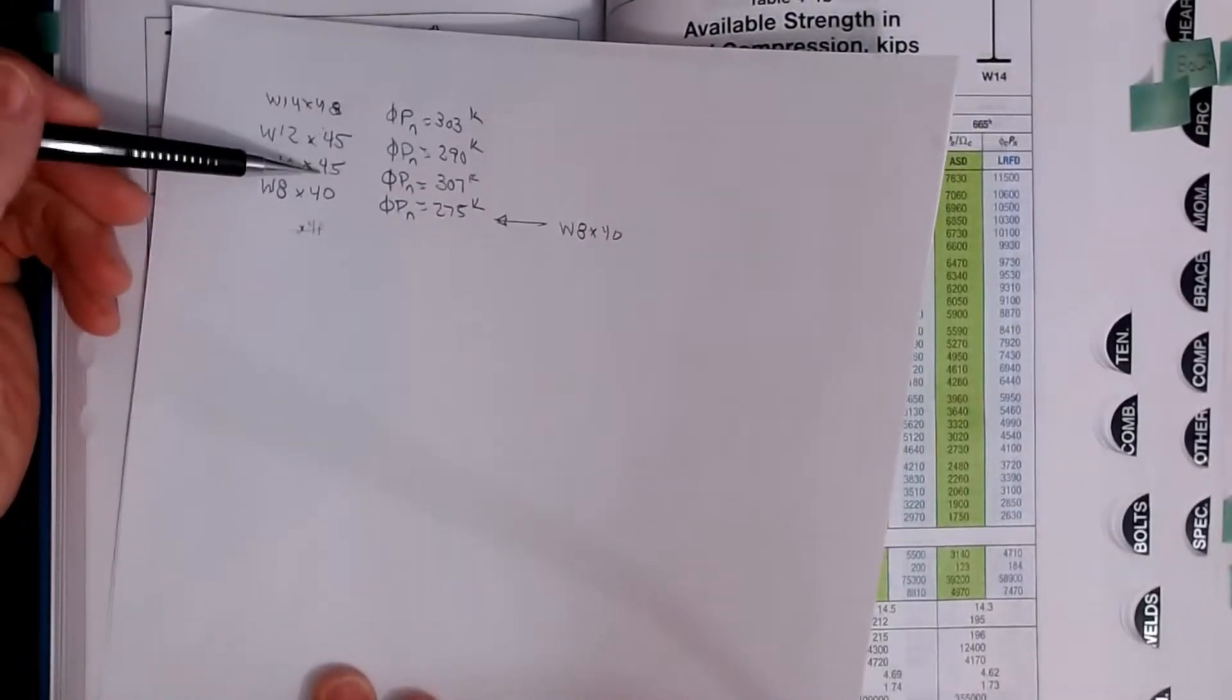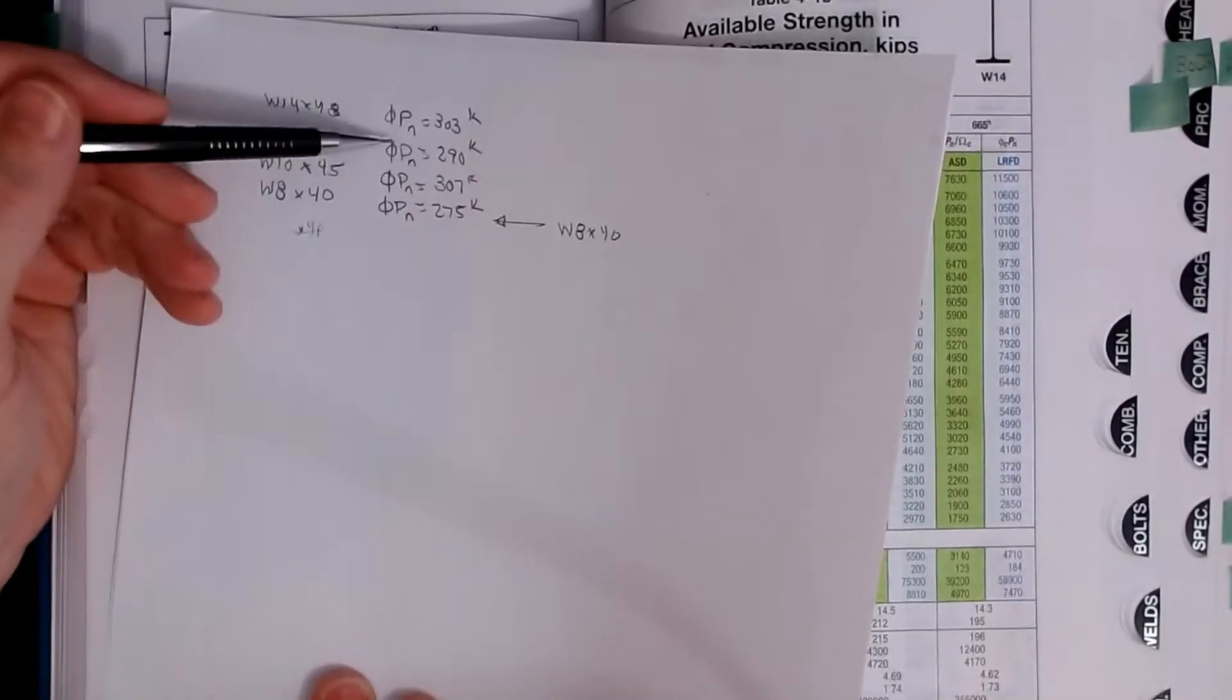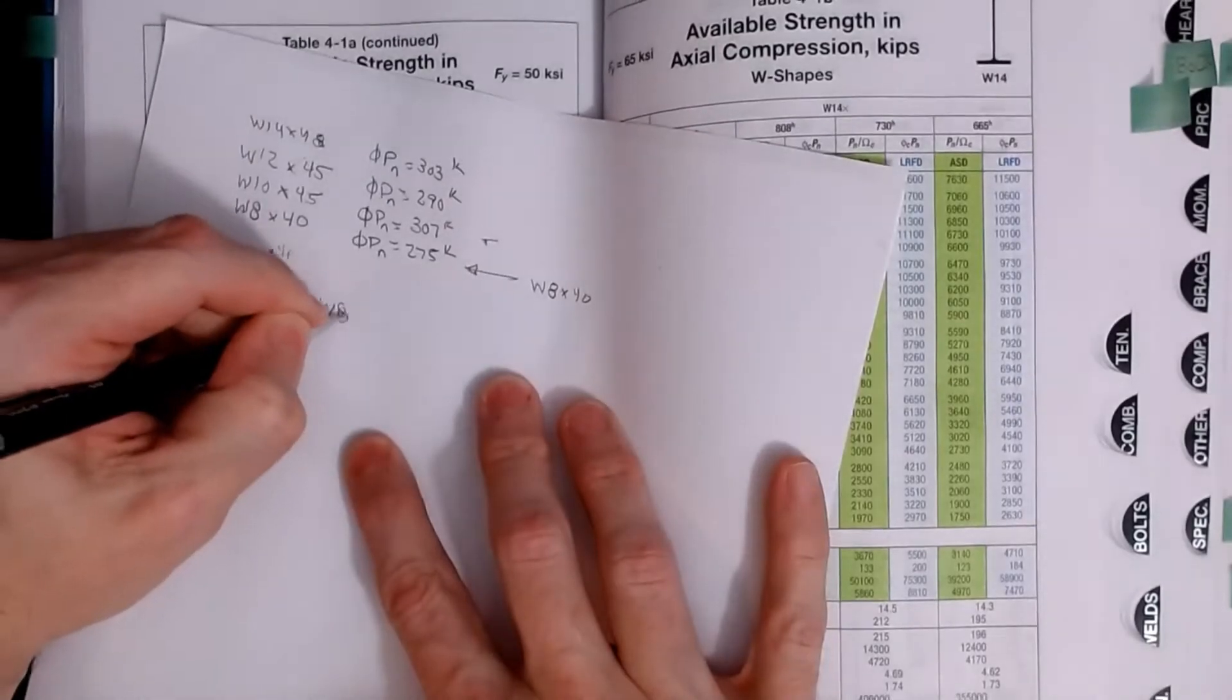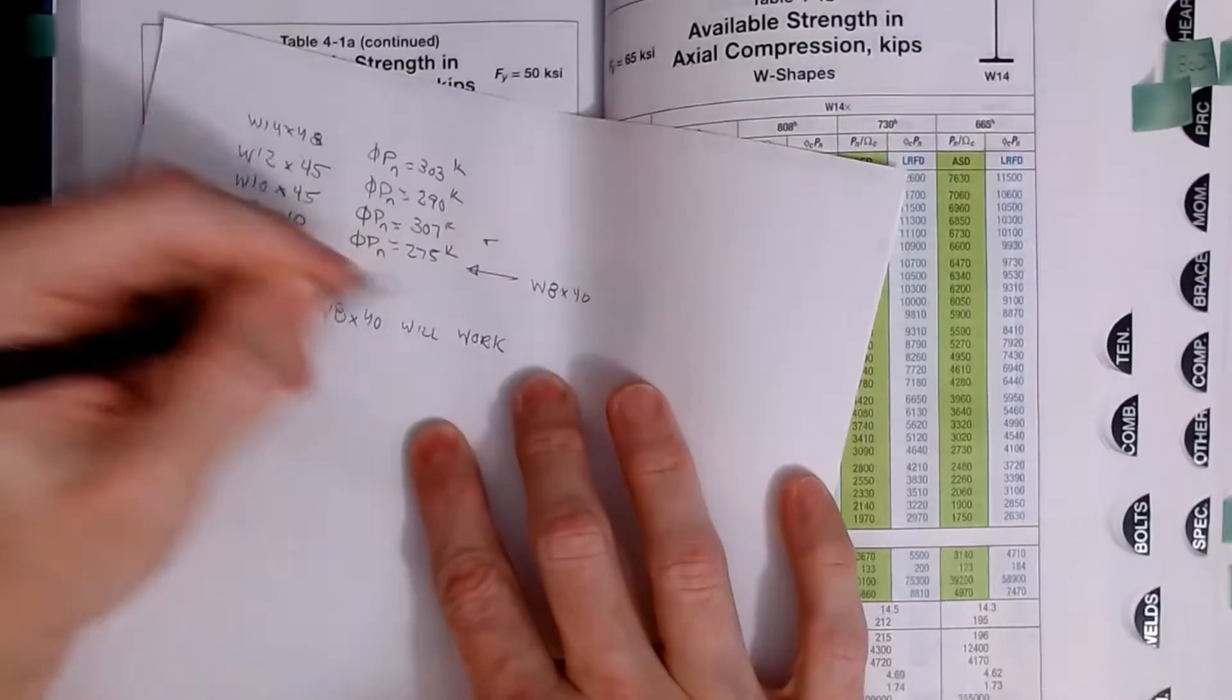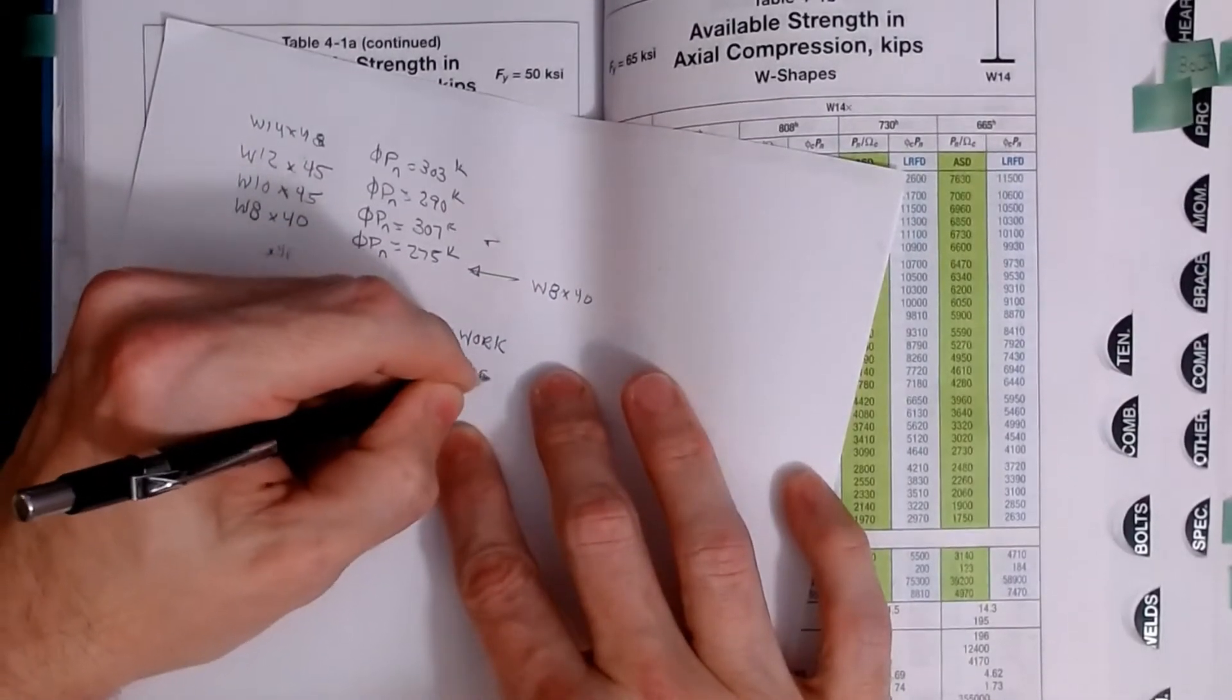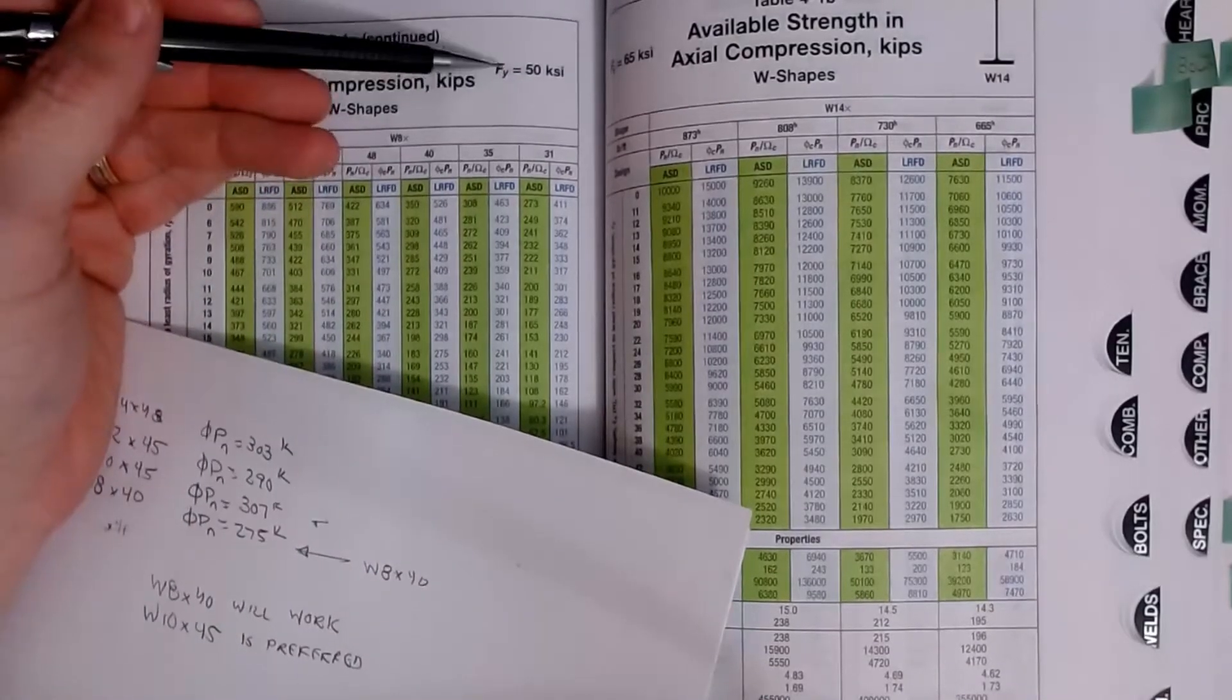So now you've got a tie, 45 and 45, which one do you choose? Well unless there's a reason that I need to use a 12 inch column versus a 10 and it's the same weight, I'm taking the one that has the higher capacity. A little bit of extra cheap insurance so this one is probably my choice. W8 by 40 will work, but a W10 by 45 is preferred. Again this is the engineer's decision, not AISC's requirement. But that's how you do it and that's how you can use these tables, just got to make sure you get into the right table, it has to be a 50 KSI table.